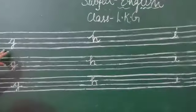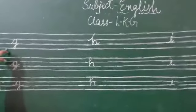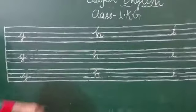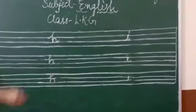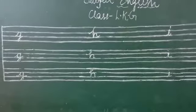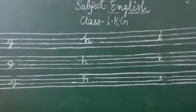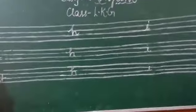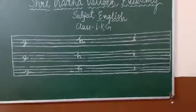Okay students, so see here. G for grapes, H for hand, I for ice cream. Now write these three letters in your English notebook. Thank you and have a nice day.